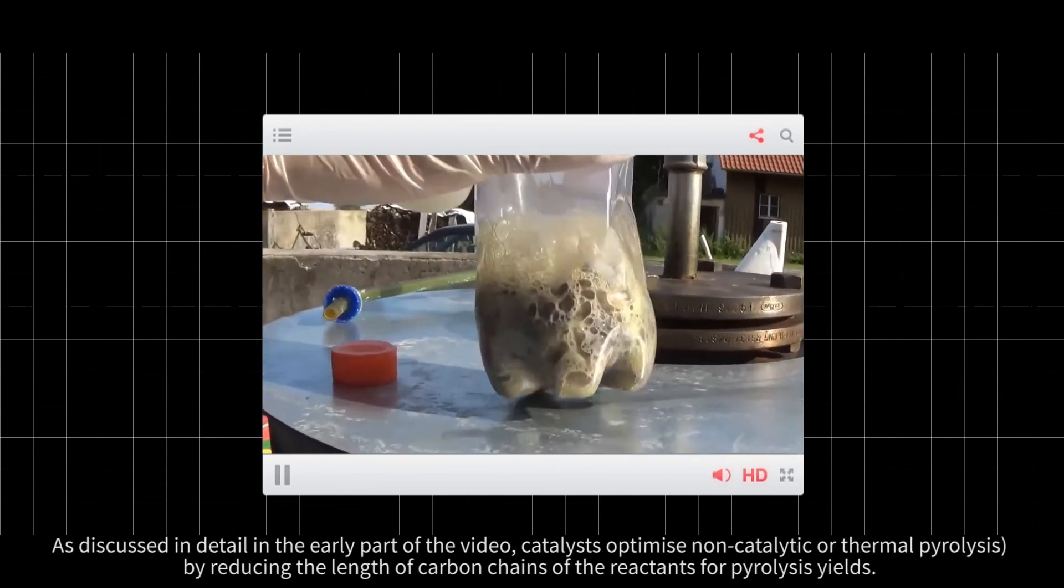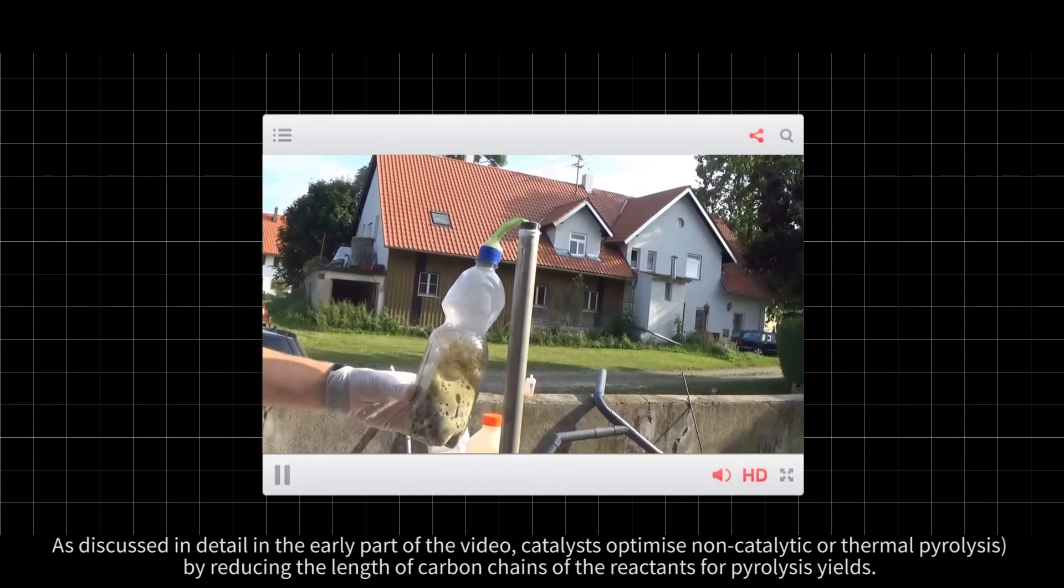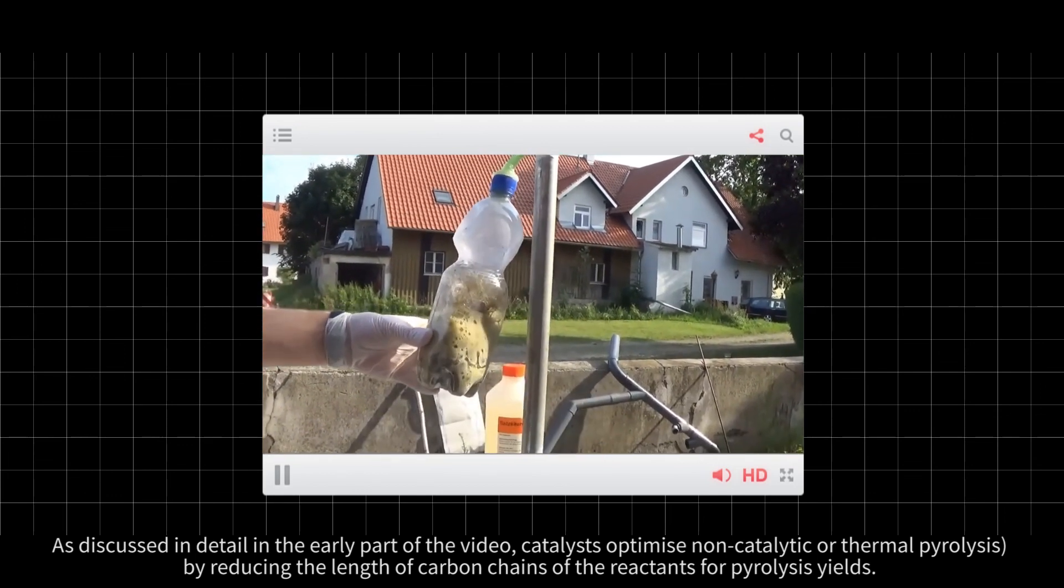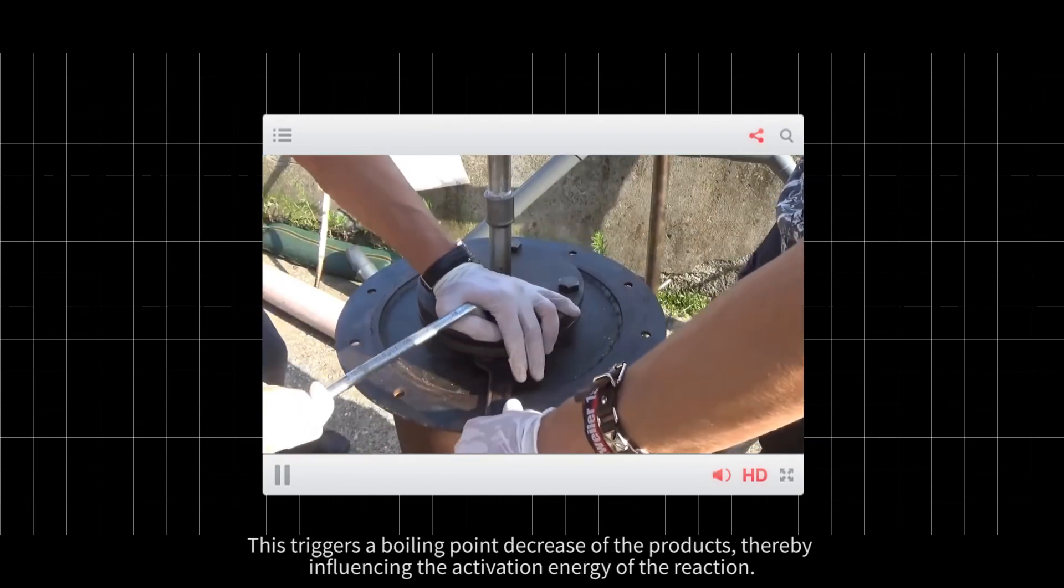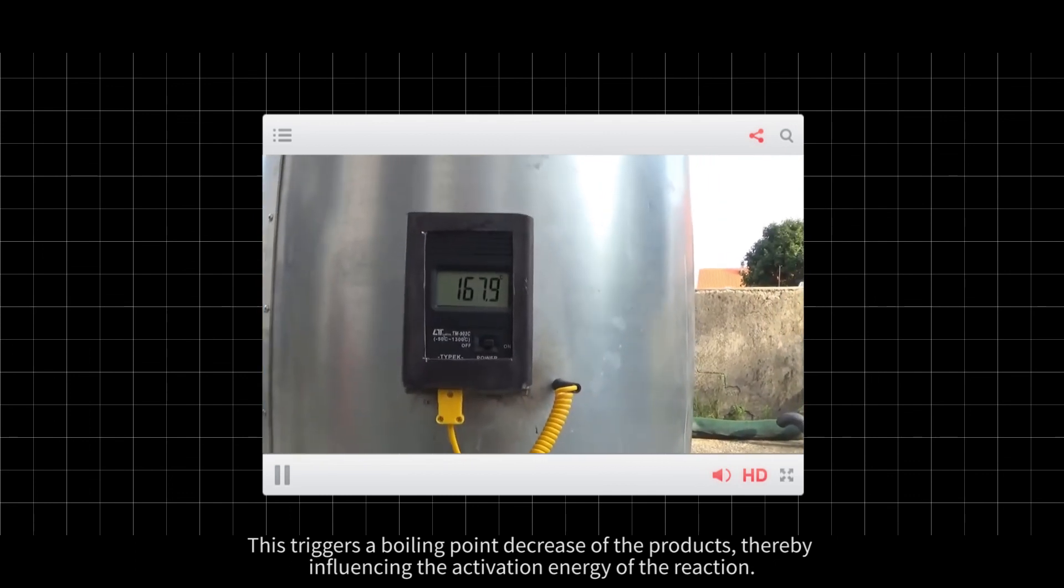As discussed in detail in the early part of the video, catalysts optimize non-catalytic or thermal pyrolysis by reducing the length of carbon chains of the reactants for pyrolysis yields. This triggers a boiling point decrease of the products, thereby influencing the activation energy of the reaction.